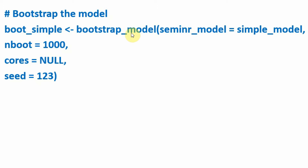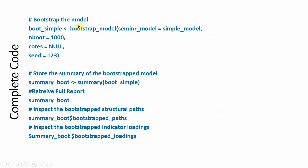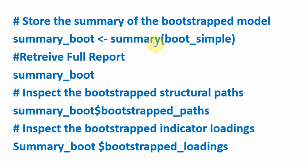To bootstrap the model, simply call the bootstrap_model function with the relevant arguments and assign the result to sem_in_R_model. The arguments include bootstrap samples, cores, and seed — these are the default values. Normally the bootstrapping samples should be 10,000. Once bootstrapped, call the summary function to retrieve the results and assign them to a summary object.